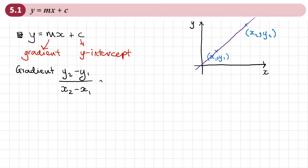It can be the other way around — it could be y1 minus y2 — but we also need to make sure that the bottom part is x1 minus x2 correspondingly.